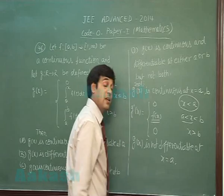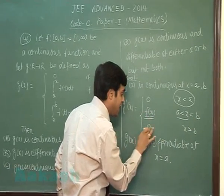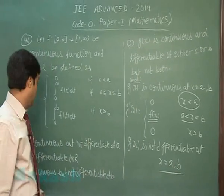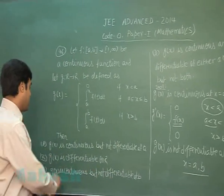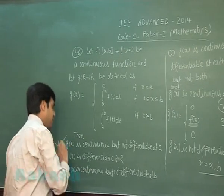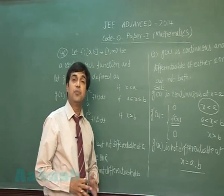at x equals a. Similarly, when we check at b, we observe f(b) and 0. Means it is not differentiable at b as well. So option a, g(x) is continuous but not differentiable at a. Option c, g(x) is continuous but not differentiable at b. These two are correct. Let's move to the next one.